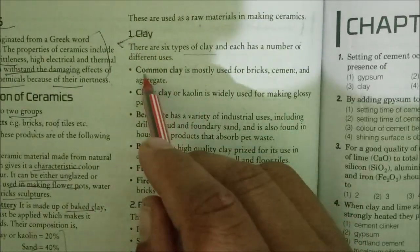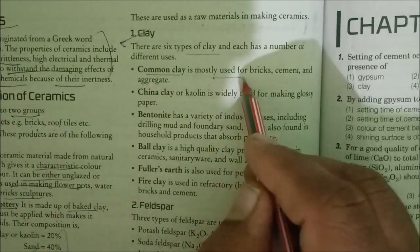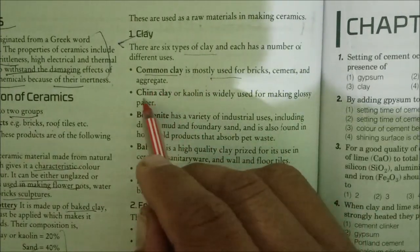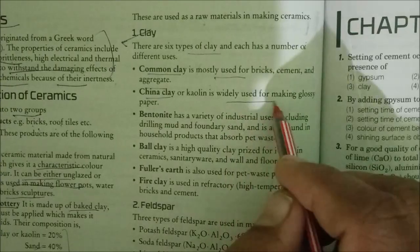There are six types of clay. Common clay is mostly used for bricks, cement, and aggregate. China clay is widely used for making glossy paper.